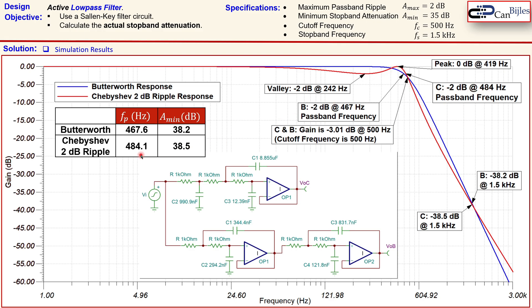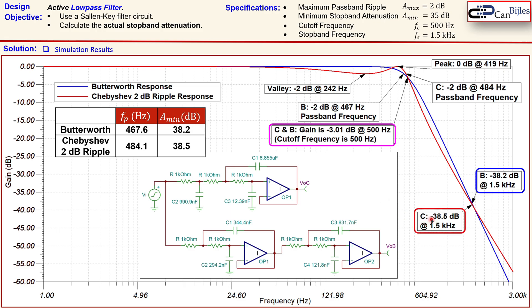At the passband edge the Chebyshev response hits −2 dB as expected. The ripple peaks occur at approximately 419 Hz and 242 Hz — these can be calculated in detail if desired. The cutoff frequency for both responses is confirmed at exactly 500 Hz. At 1.5 kHz the Butterworth attenuation reads −38.2 dB and the Chebyshev reads −38.5 dB, both matching the calculated values.